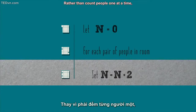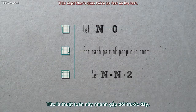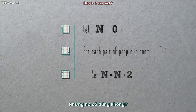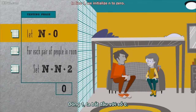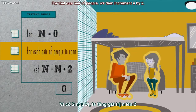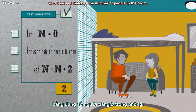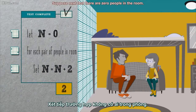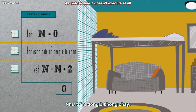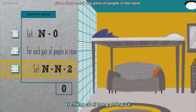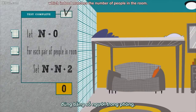Pretty simple change, right? Rather than count people one at a time, we instead count them two at a time. This algorithm runs twice as fast as the last. But is it correct? Does it work if there are two people in the room? In line one, we initialize n to zero. For that one pair of people, we then increment n by two, and so by this algorithm's end, n is two, which indeed matches the number of people in the room. Suppose next that there are zero people in the room. In line one, we initialize n to zero. Line three doesn't execute at all since there aren't any pairs of people in the room, and so n remains zero, which indeed matches the number of people in the room.